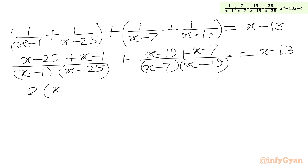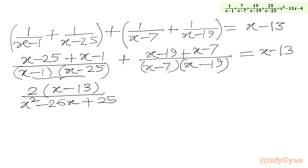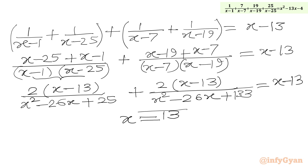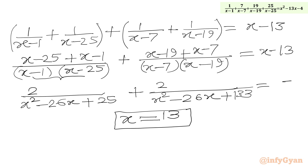Multiplying the brackets in the denominator we get x squared minus 26x plus 25 for the first pair and x squared minus 26x plus 133 for the second pair. Both numerators contain the factor (x minus 13). If we plug in x equal to 13 it satisfies the equation, so we remove (x minus 13) from both sides. Our second real solution is x equal to 13.